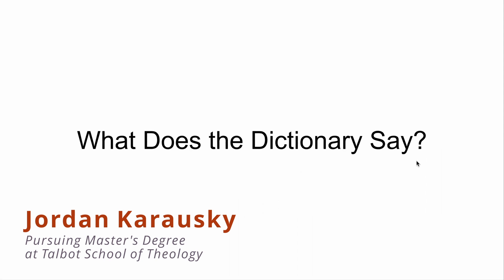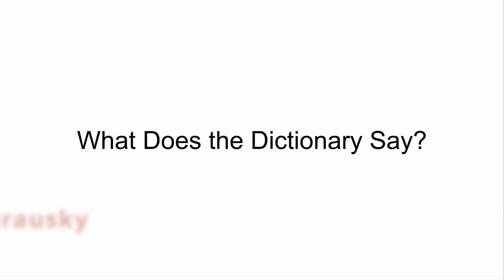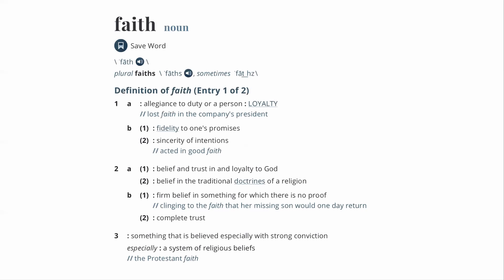What does the dictionary say? That's usually where you go to solve problems with definitions like this. This is a screenshot from the Merriam-Webster dictionary on faith — it's irritatingly inconsistent. The definition of faith begins — can you guys see my mouse pointing at things? The definition: allegiance or duty to a person, loyalty. Fidelity — 'fide' is the Latin root, meaning trust. Then further down in 2b: a firm belief in something for which there is no proof.